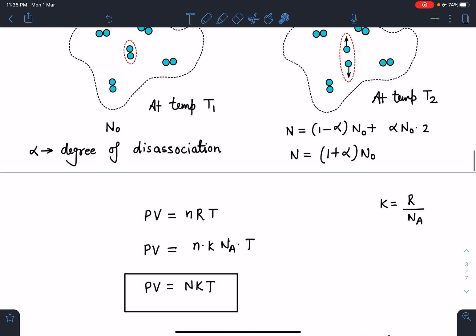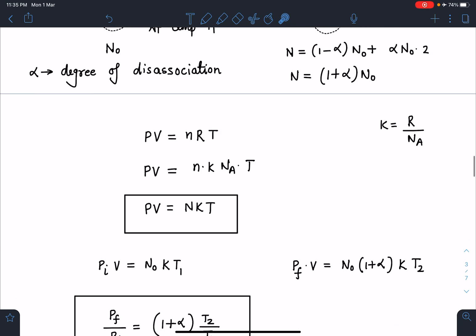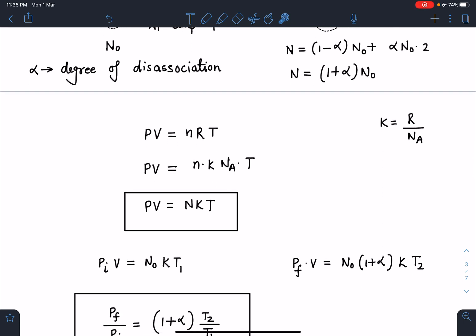Now we can use ideal gas equation so PV = nRT. I can write the Boltzmann constant k as R/Nₐ where Nₐ is Avogadro number. If I adjust these terms, R is k times Nₐ and n times Nₐ is the total number of molecules, so I can write this ideal gas equation in terms of total number of molecules as PV = NkT.